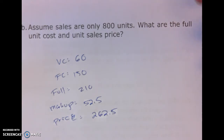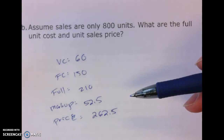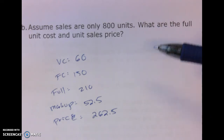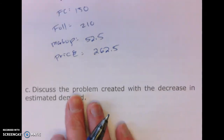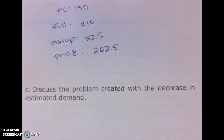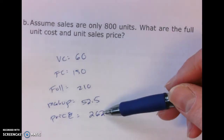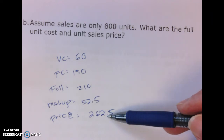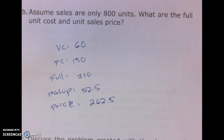When the price goes up, quantity demanded goes down — the exact same issue as in the study abroad example. If the price is too high, demand falls, which means the denominator shrinks further, making fixed costs even harder to cover. Lower demand leads to higher product costs because fixed costs are spread over fewer units, which then pushes prices higher, which then leads to lower demand — a circular problem with cost plus pricing.